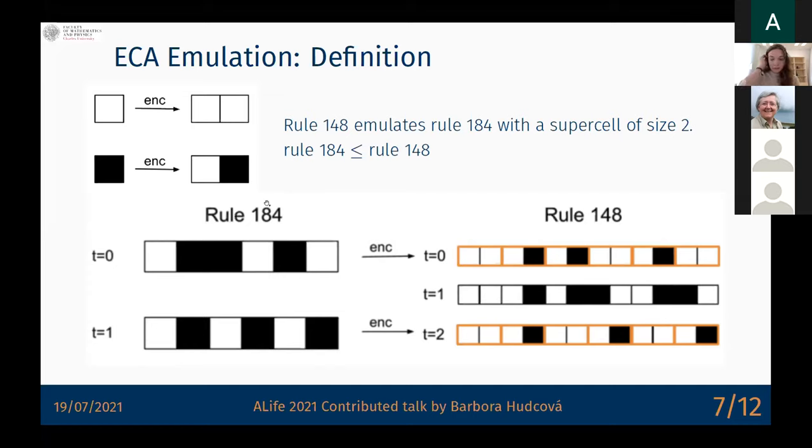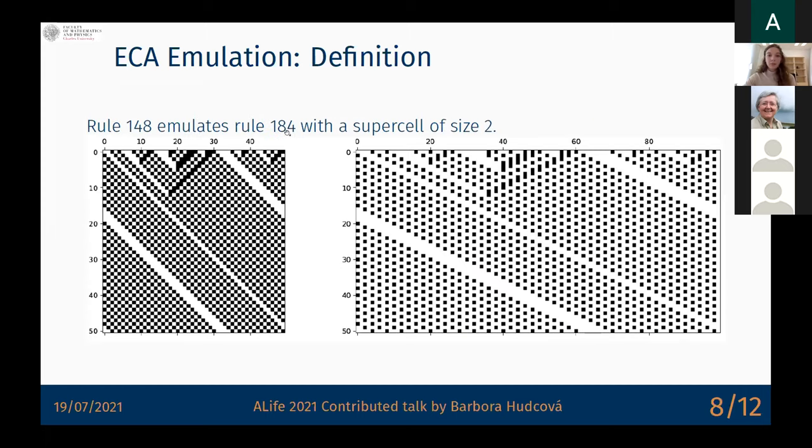In some sense we have a commuting diagram. If you would like to read more about this in maybe a more formal manner, I recommend reading the paper where this is written properly. But what it essentially means is that there is a special subset of initial configurations of rule 148 which are valid encodings, and once we start with a valid encoding, then every two time steps we end up with a valid encoding. It's not just any valid encoding—it's the valid encoding of the correct result of simulating the emulated rule for one time step. In this sense we get a pre-order. We can say that rule 148 emulates rule 184 by using this relation notion, and it can easily be shown that it is a transitive relation and that whatever computation the weaker rule can do, the stronger rule can do as well.